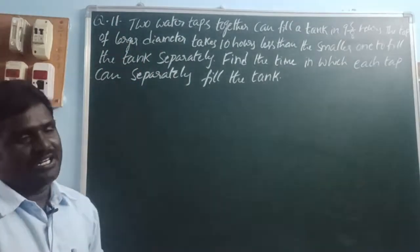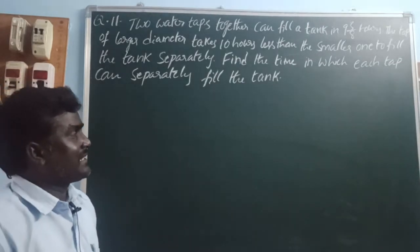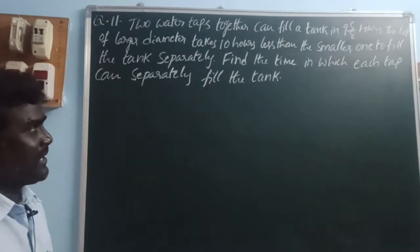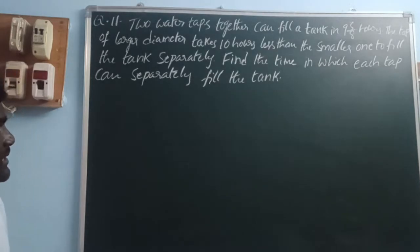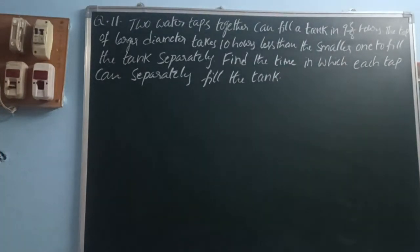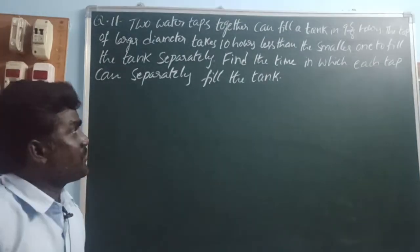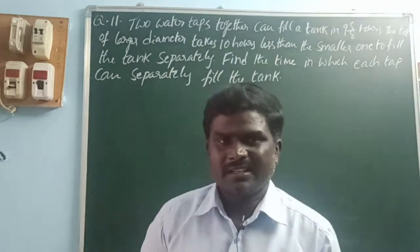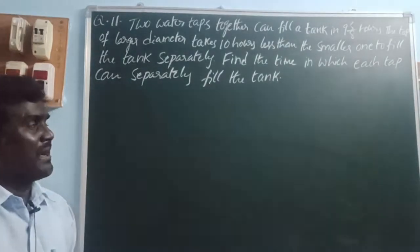Question number 11. Two water taps together can fill a tank in 9 and 3/8 hours. The tap of larger diameter takes 10 hours less than the smaller one to fill the tank separately. Find the time in which each tap can separately fill the tank.